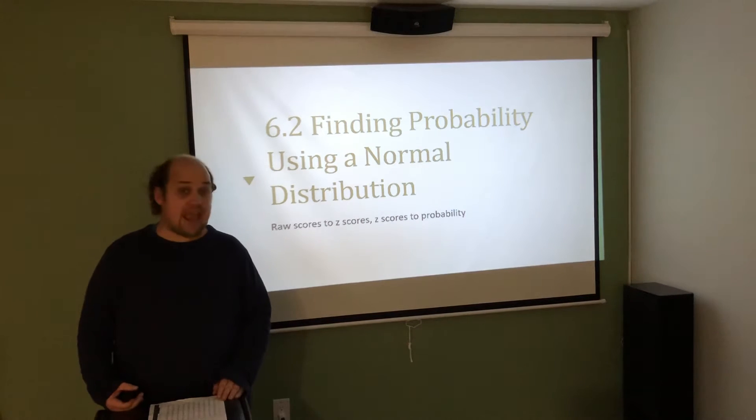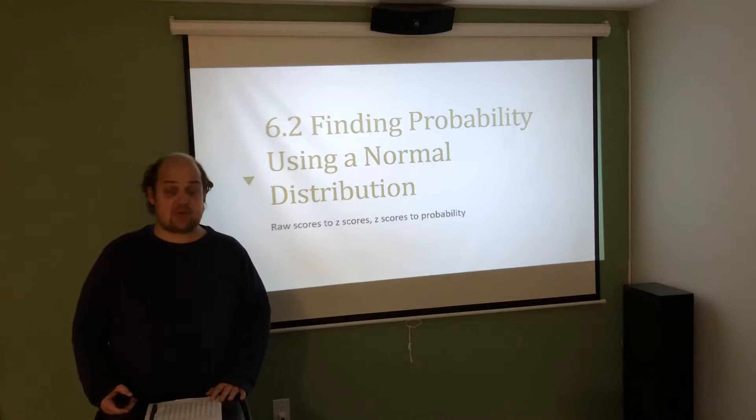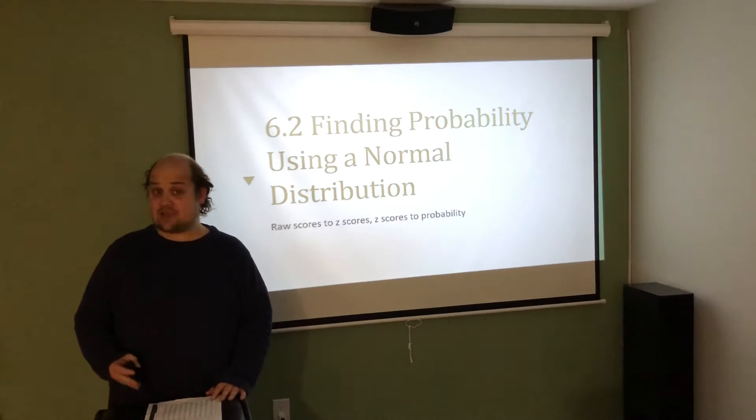Basically, we need to identify x, mu, and sigma. Once we've identified them, we can then move to where we put them into the z-score formula to find a z-score. Once we have that z-score,